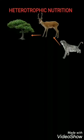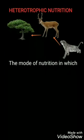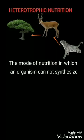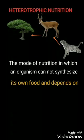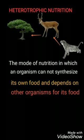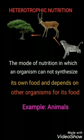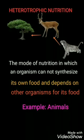Now I will describe heterotrophic mode of nutrition. It is that mode of nutrition in which an organism cannot synthesize its own food through photosynthesis and depends on other organisms for its food. All animals have heterotrophic mode of nutrition. Most bacteria and fungi also have heterotrophic mode of nutrition, as do some non-green plants.